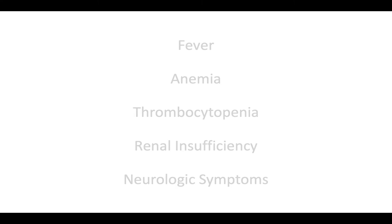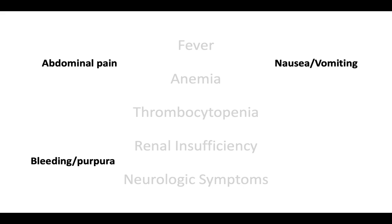Other common manifestations include abdominal pain and nausea or vomiting. Gastrointestinal symptoms are quite common, occurring in about 70% of patients. Due to thrombocytopenia, patients also present with bleeding and/or purpura, which occurs in about 50% of patients. Finally, due to hemolytic anemia, patients present with weakness, which is found in about 60% of patients.